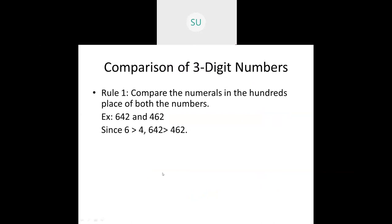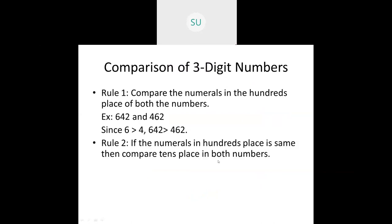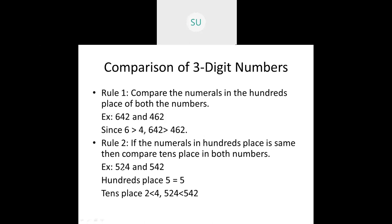Sometimes the digit in the hundreds place will be the same. If the numerals in hundreds place are the same, compare the tens place. Here both numbers have 5 in the hundreds place, so we move to tens place. The first number has 2 in tens place and the second has 4. Since 2 is smaller than 4, 524 will be smaller than 542.